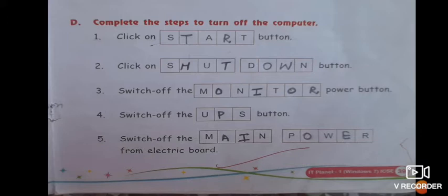Then second point, click on dash button, so shut down button. So some letters are missing so you have to write H then T then T then O then W, it becomes shut down. Then switch off the dash power button: monitor. So in this you will write O I O R, monitor.